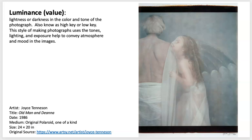The third element we're moving on to is luminance — the lightness or darkness of the colors or the tones in the photograph. I'm also going to introduce high key and low key, because that has a lot of effect on this concept of luminance. This style of photographing is very affected by the type of lighting and the exposure to convey the atmosphere or mood in the images.